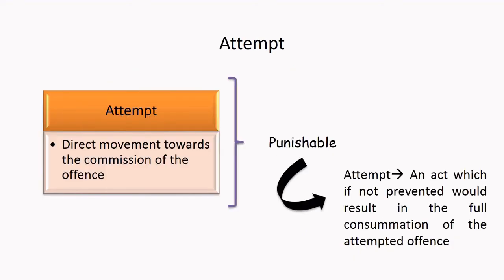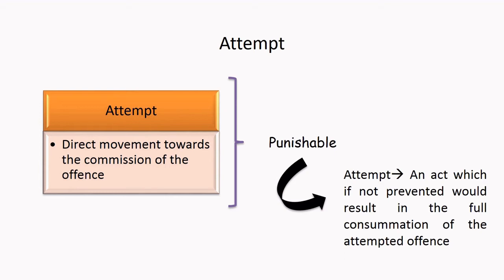Next comes the Attempt. Attempt is a direct movement towards the commission of the offense — the stage very prior to the actual commission of the offense — and it is made punishable also. Why? Because if this stage is not prevented, it would result in the consummation of the attempted offense, and all the successful attempts happen to be crime commissions. Once the attempt stage is passed, you move on to the actual commission of the offense, which is the last stage of crime commission, and it is always punishable because we are talking about the substantive offense under consideration.